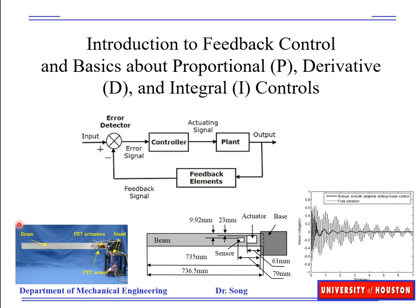Recall earlier in the semester, I used this as a tool to show how a feedback control system works. We have a plant, which is a flexible beam, and the purpose is to control the vibration of this flexible beam. First we have the sensors, which give us the sensing signal, and then we have the controller — in this case, the control action plus the actuator.